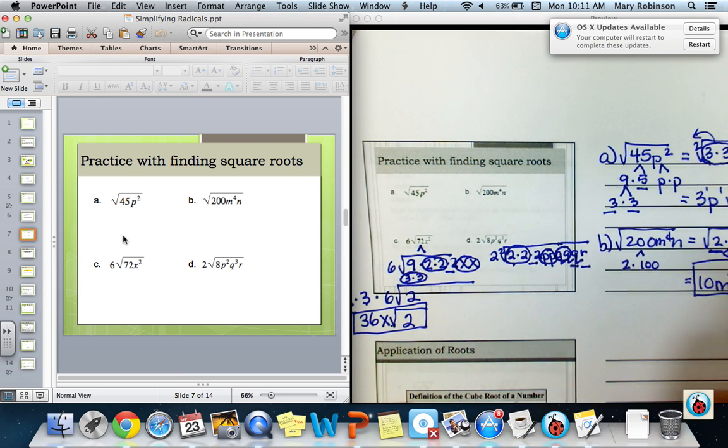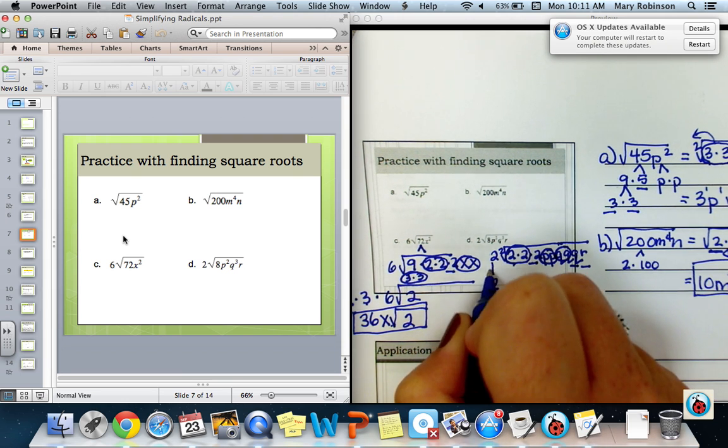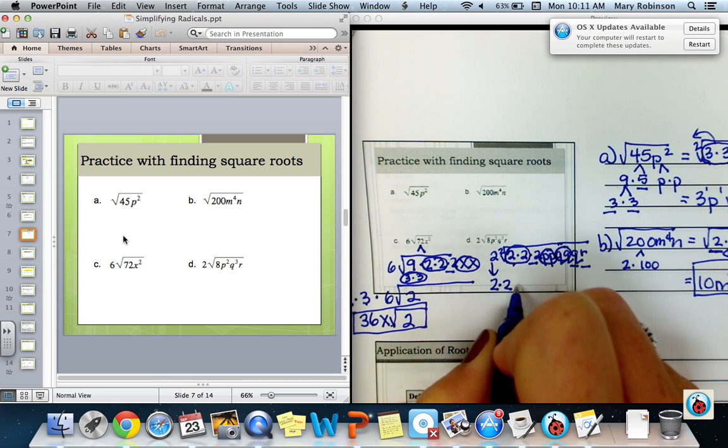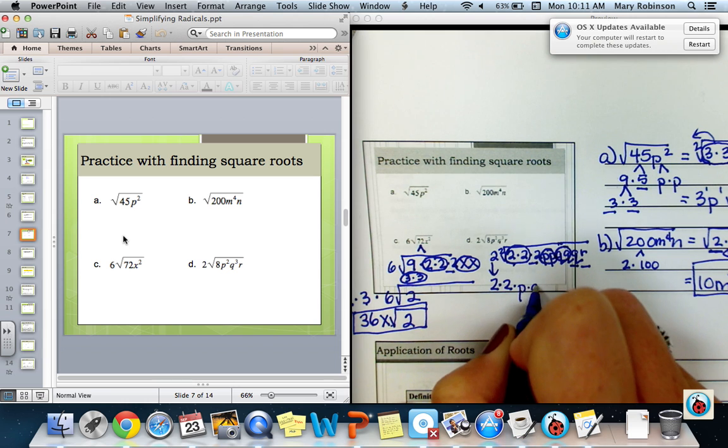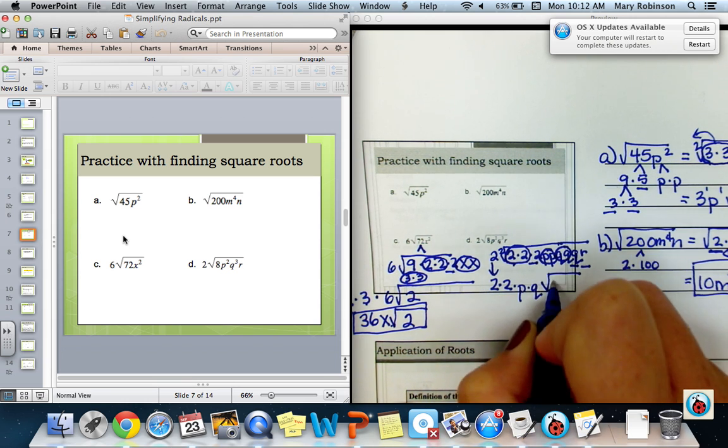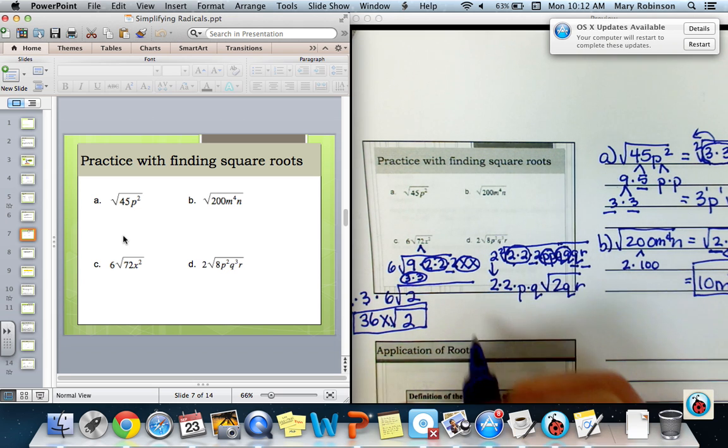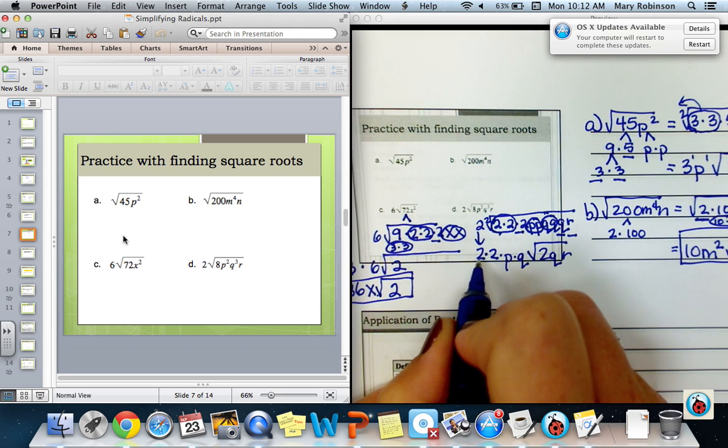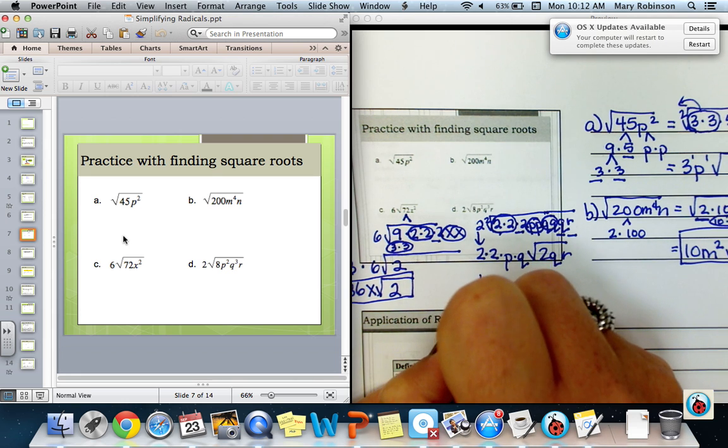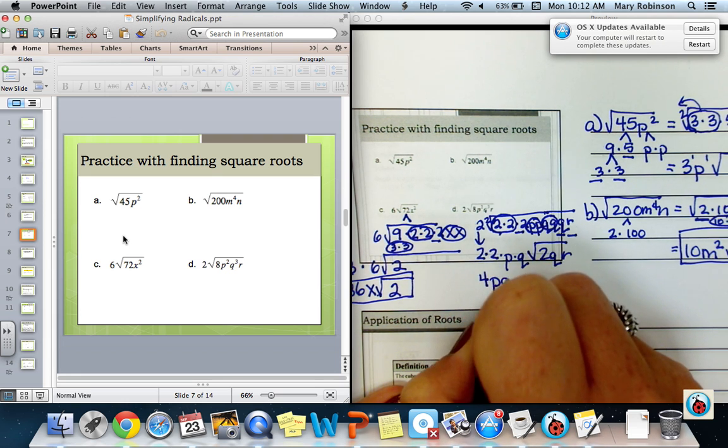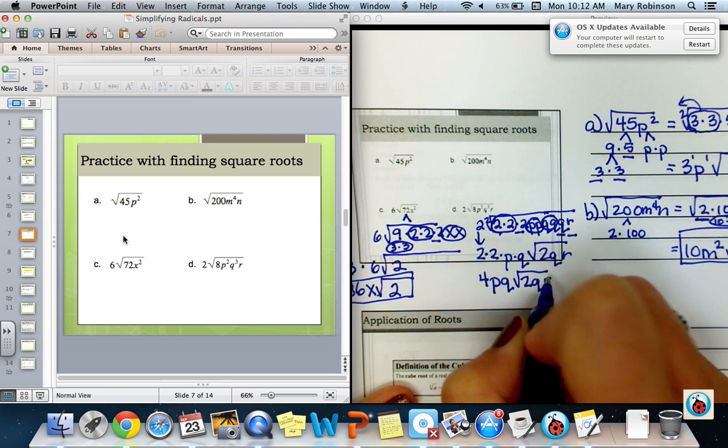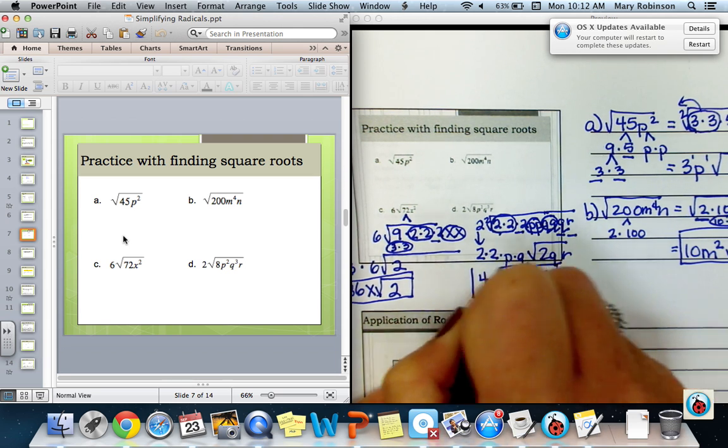Nothing else can be paired up. So we have a singleton here of 2, Q, and R. The 2 from right here stays outside. I multiply by the 2 that got paired up here, the P and the Q, leaving the 2QR. Then I want to finish off by multiplying anything that can be multiplied out front. 2 times 2 is 4, P, Q, times the square root of 2QR. I'm all done.